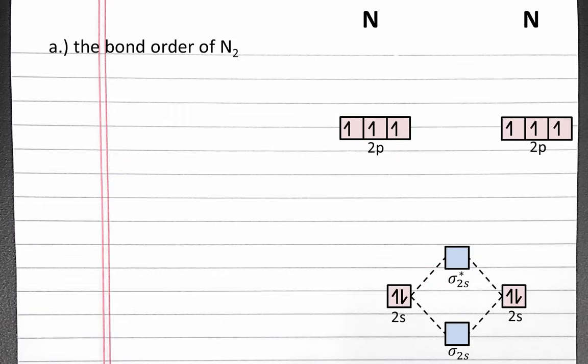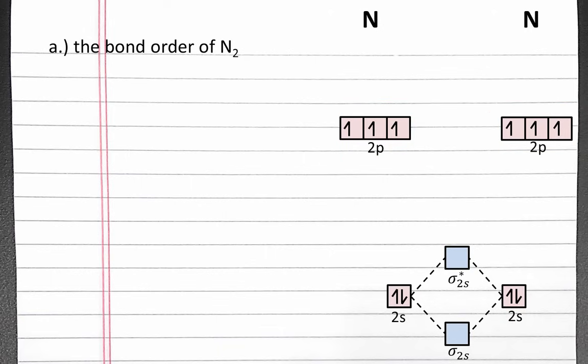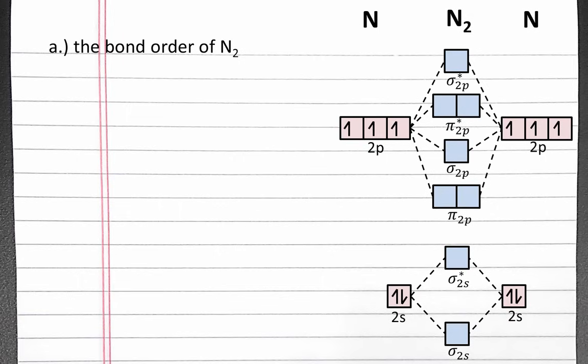Next, we'll combine the three 2p orbitals of both nitrogen atoms to create six new molecular orbitals. When the p orbitals combine, they create both sigma and pi molecular orbitals. The correct order of lowest energy to highest energy orbitals are shown here, and are determined computationally.